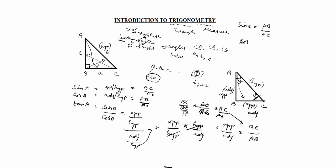Cos C equals BC by AC. And tan C equals AB divided by AC into AC by BC — this cancels — so tan C equals AB by BC. This is opposite by adjacent.